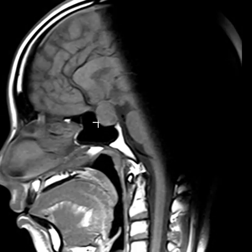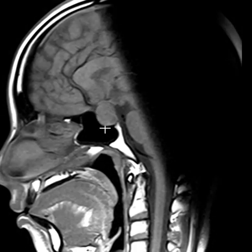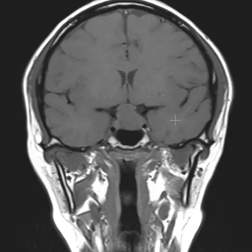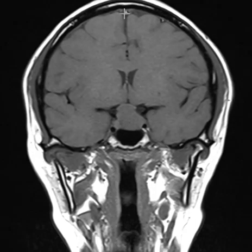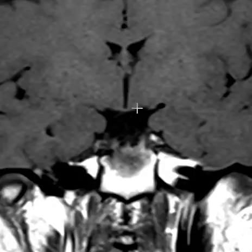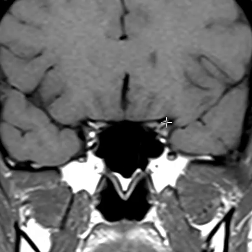Pushing on the optic chiasm is causing her visual disturbance. On this view we see the same thing — this is the enlarged pituitary gland and this is the cup, the sella. The sella is expanded a little bit and the pituitary mass comes up here and pushes on this line. Now we're looking straight on at the patient. Here's the top, right, left, and the enlarged pituitary gland is right here — this is a pituitary mass.